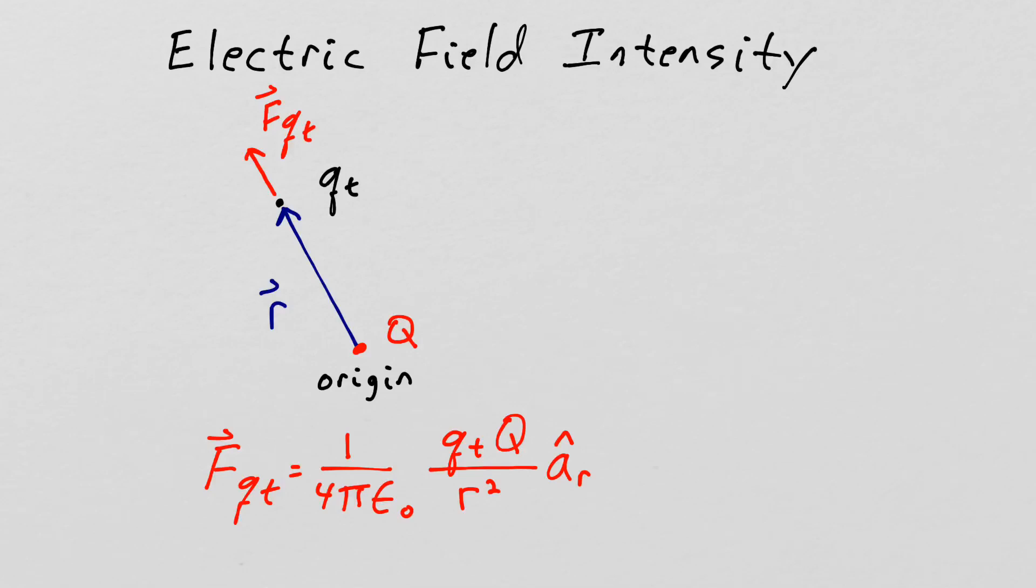So let's put a charge Q at the origin and some other charge at any other location in space and call it q sub t at location r.